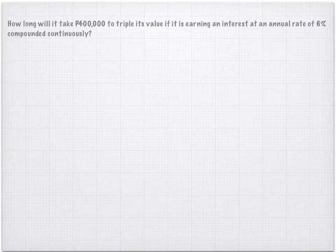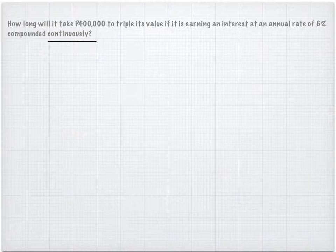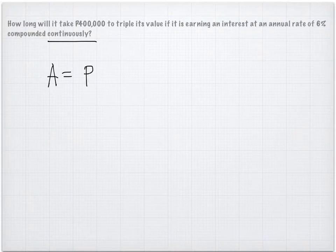Since the type of compound interest is continuously, we'll be using the formula for the amount will be equal to the principal, and then e to the rate times time.